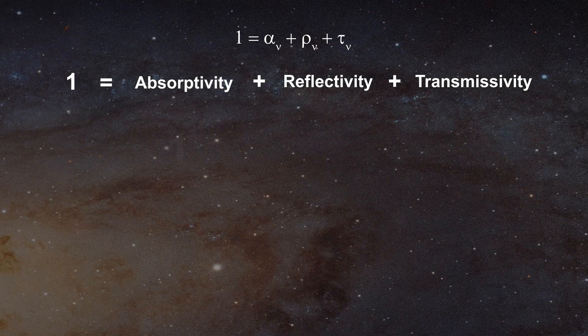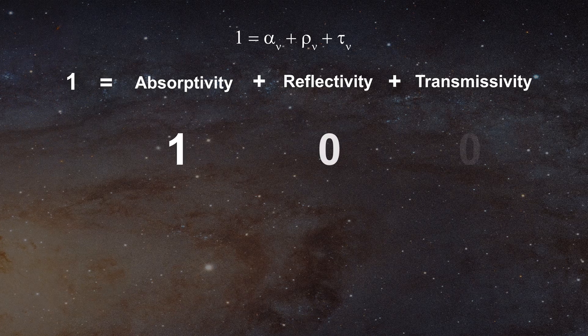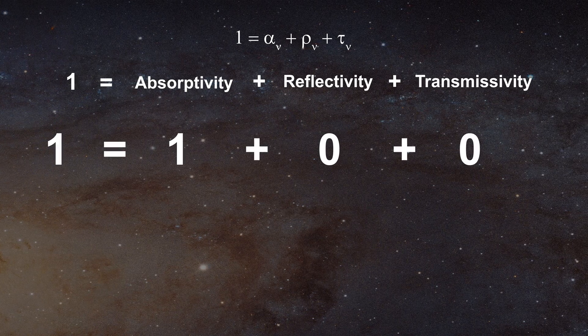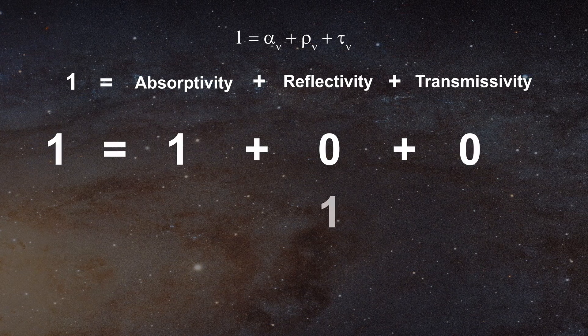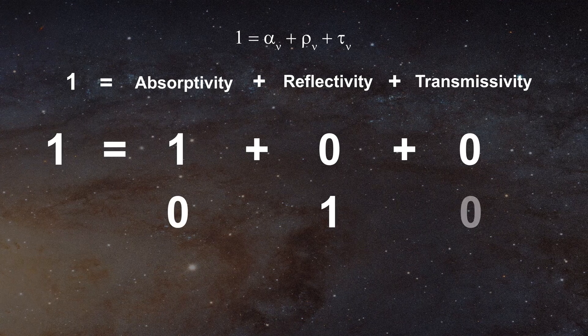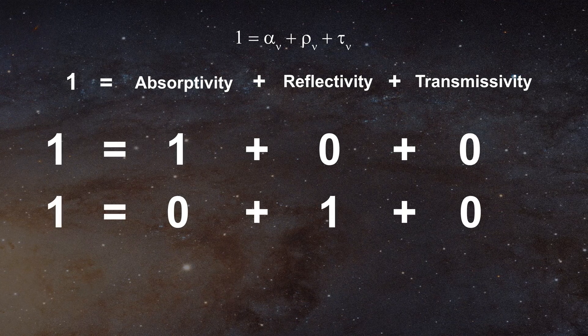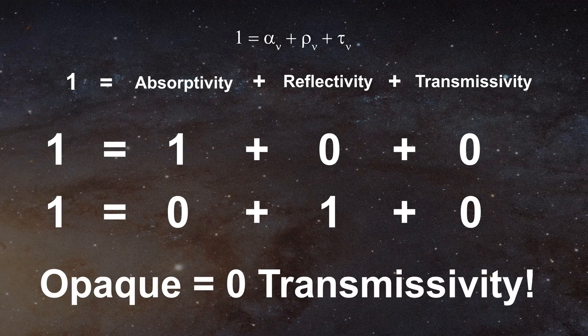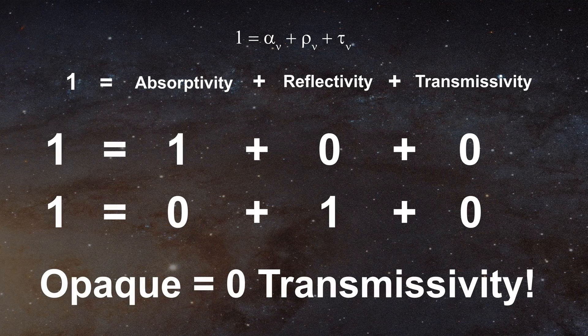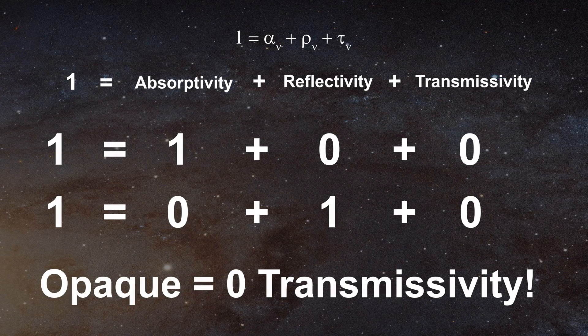Note that if absorptivity equals 1, then reflectivity and transmissivity both must equal 0. If reflectivity equals 1, then absorptivity and transmissivity must equal 0. Note that in dealing with fully opaque objects, transmissivity must be zero since opaque objects do not permit any light to pass through.